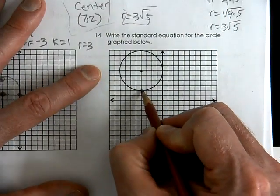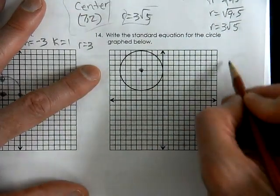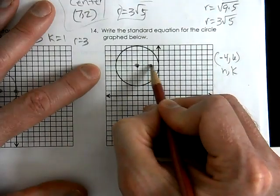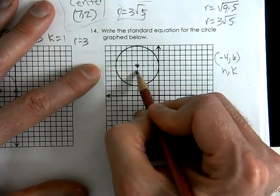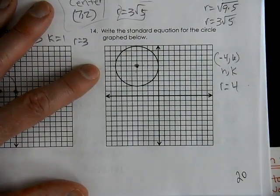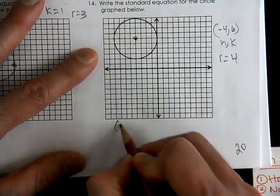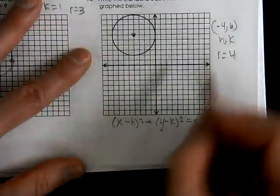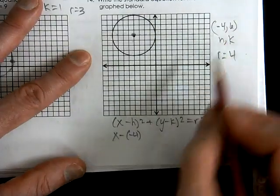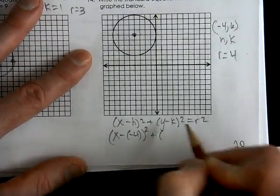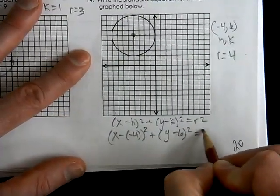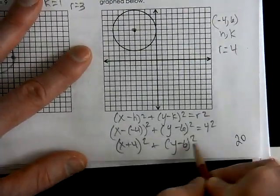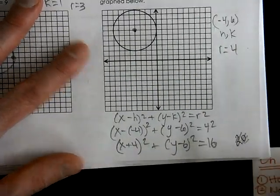Counting out the radius in each direction to verify — the center is at (−4, 6) and the radius is 4. Using the standard form, with h = −4 we get x − (−4), which becomes (x + 4)². The equation is (x + 4)² + (y − 6)² = 16. Good luck, everybody.